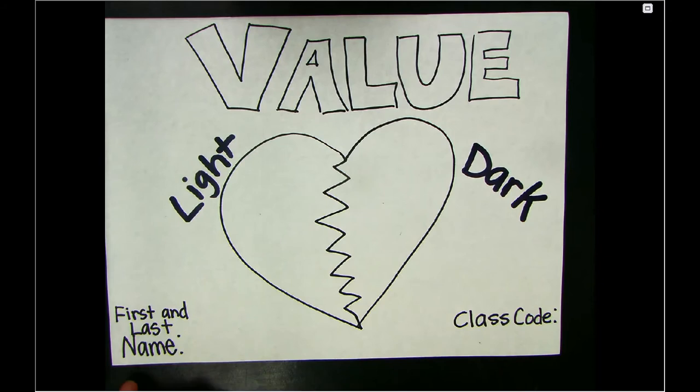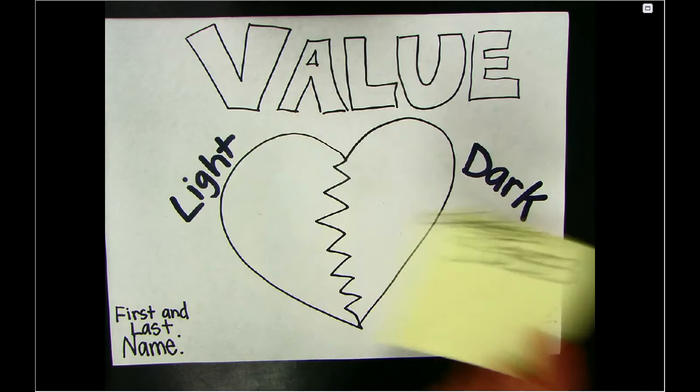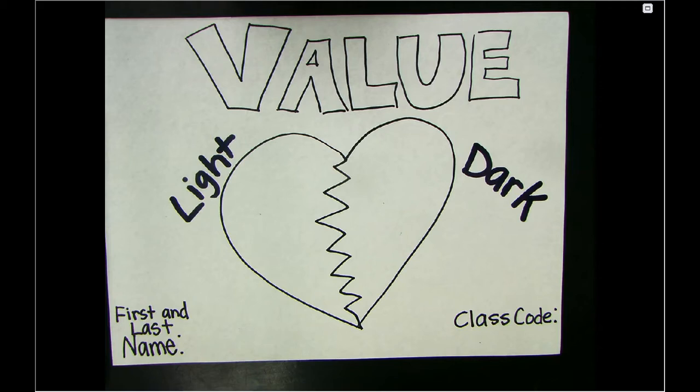Make sure that you write your first and last name at the bottom along with your class code. Your class code is going to be whatever class you are in — so if you're in third period you would write 'third,' fourth period write 'fourth,' and so on. You can go ahead and pause this video if you need to see this before you move forward.